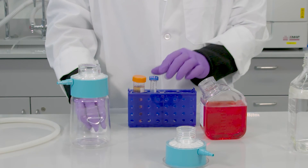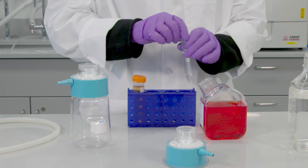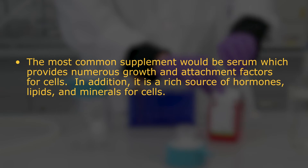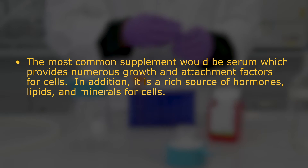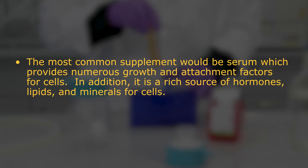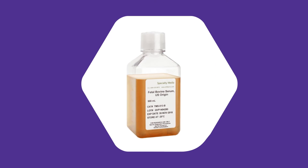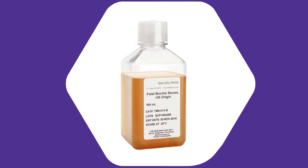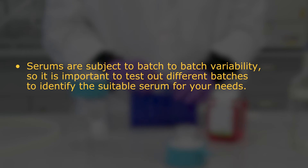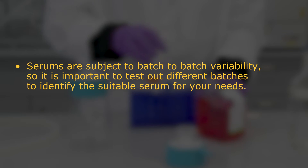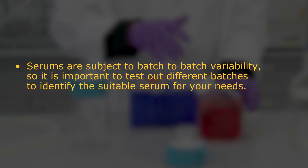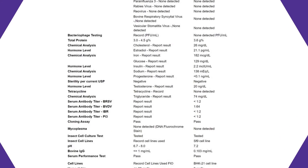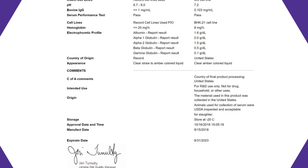Now let's cover so-called supplements. These would be any additives added to the media to supplement and meet specific culturing needs. The most common supplement would be serum, which provides numerous growth and attachment factors for cells. In addition, it is a rich source of hormones, lipids, and minerals for cells. Most commonly used form of serum is fetal bovine serum, while other types of serum available are newborn calf serum and horse serum. Serums are subject to batch-to-batch variability, so it is important to test out different batches to identify the suitable serum for your needs. Please also make sure to obtain serum from reputable and well-established vendors, who will supply you with a certificate of analysis covering an extensive list of quality measurements.